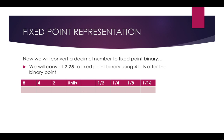We'll look at the left side of the binary point first. We've got 7. Starting from the leftmost column: does 8 go into 7? No, so we put a 0 under 8. Does 4 go into 7? Yes, so we put a 1 under 4. 7 minus 4 is 3. Does 2 go into 3? Yes, so we put a 1 there. 3 minus 2 is 1. Then we have 1 in the units column, so we put a 1 there. So far we've got 0111, i.e., 111 to the left of the binary point.